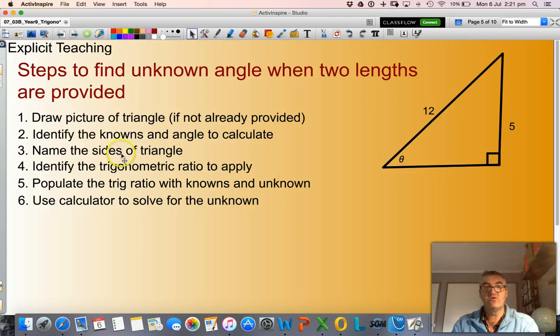I want to name the sides on my triangle. Well, this side here, it's across from my right angle, so it's the hypotenuse. This side here, this is across from my reference angle, so it is the opposite.